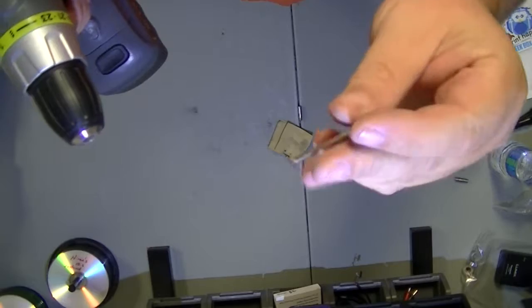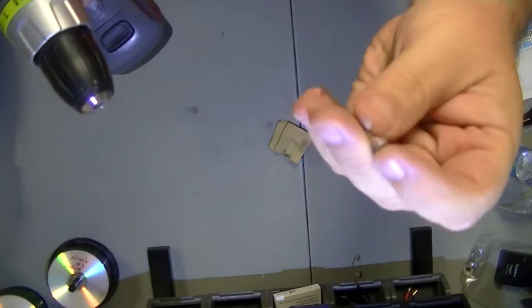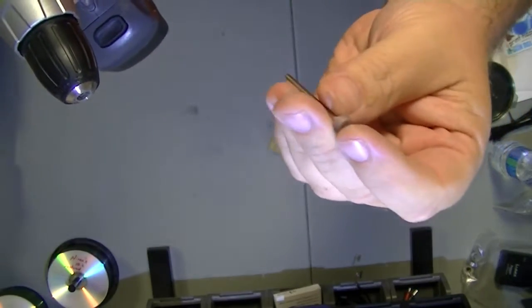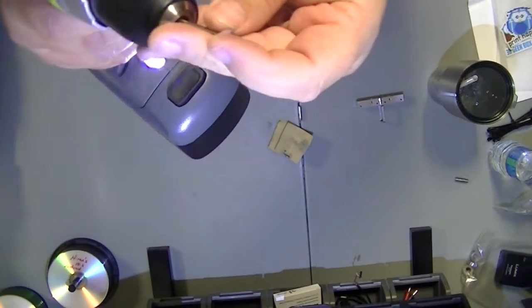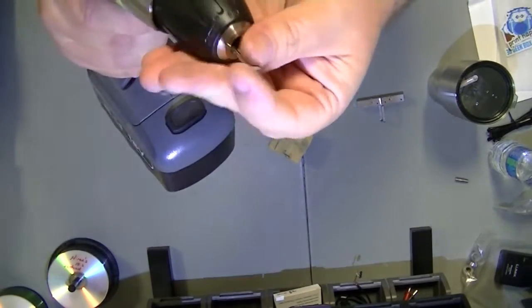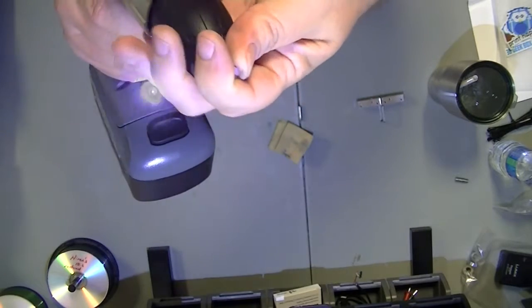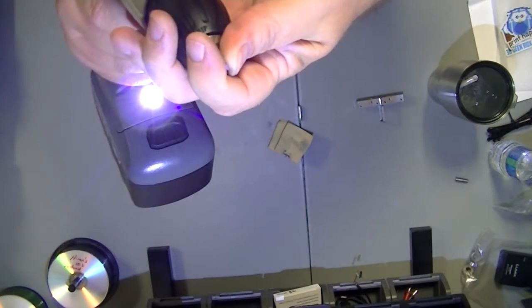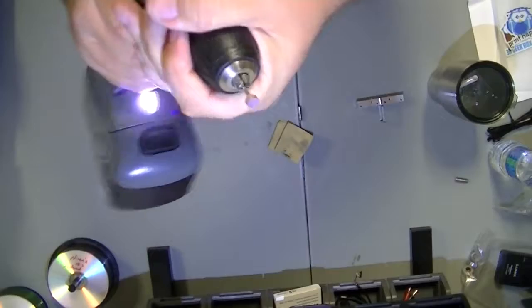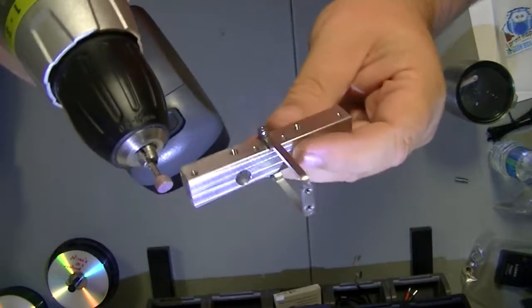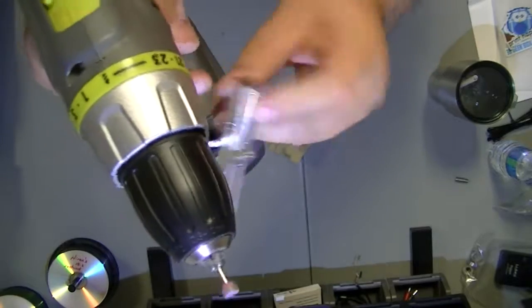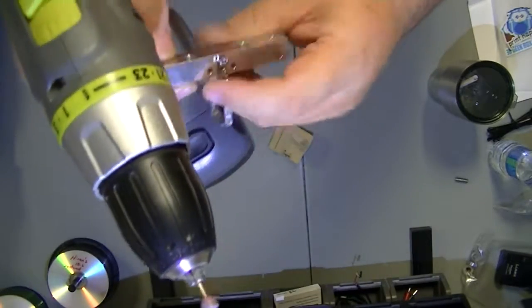Next I had this little sanding bit that came out of a cheap Dremel set that I got at Harbor Freight, that I'm going to use to try to smooth up the burrs inside the block here.